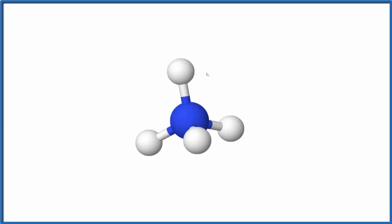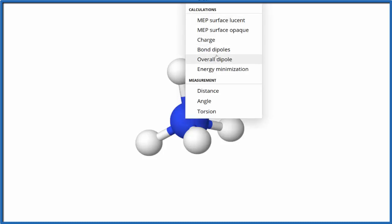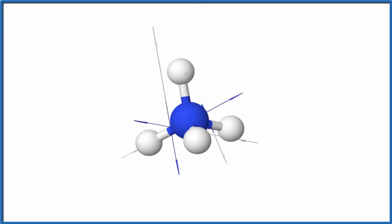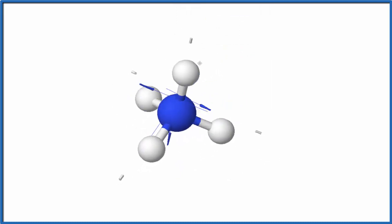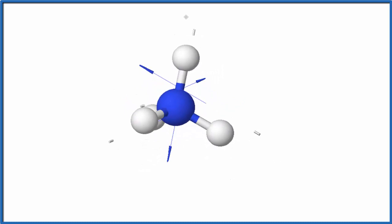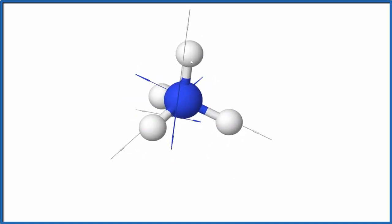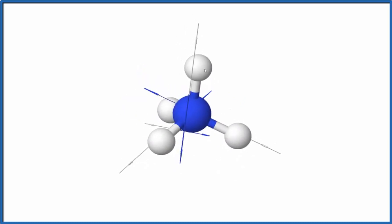If we look at the dipoles for each nitrogen-hydrogen bond, we see that each bond has a dipole, but they're all pointing in opposite directions. Because they're pointing in opposite directions, the ion overall is nonpolar because they cancel out. We have a net dipole of zero.